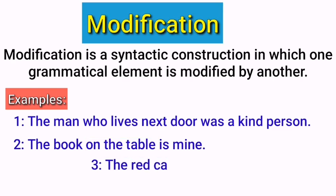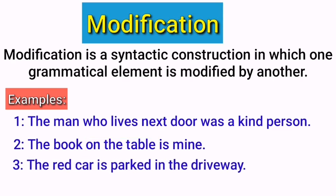'The red car is parked in the driveway.' Here, the word 'red' is an adjective and it modifies the noun 'car.' It gives us information about the color of the car. So an adjective can also be a modifier, and this is known as modification.